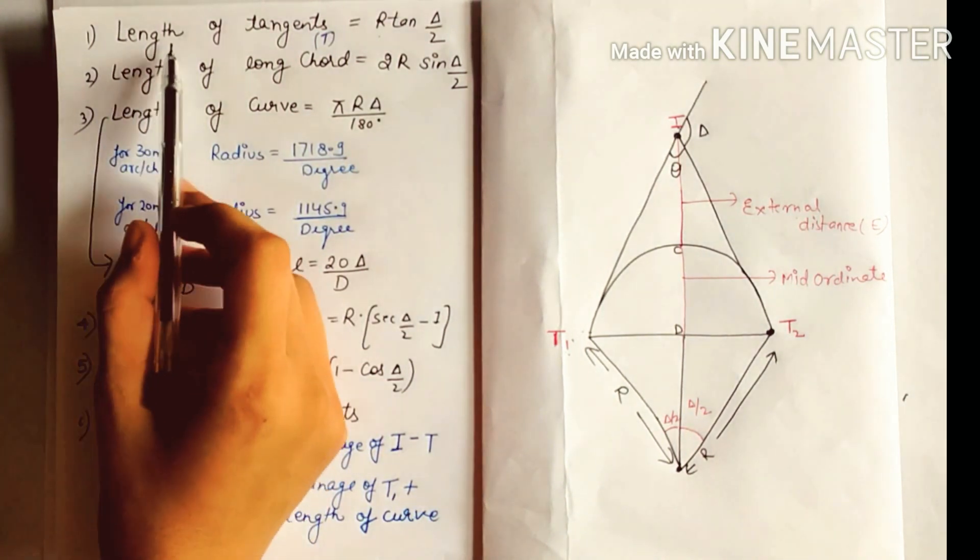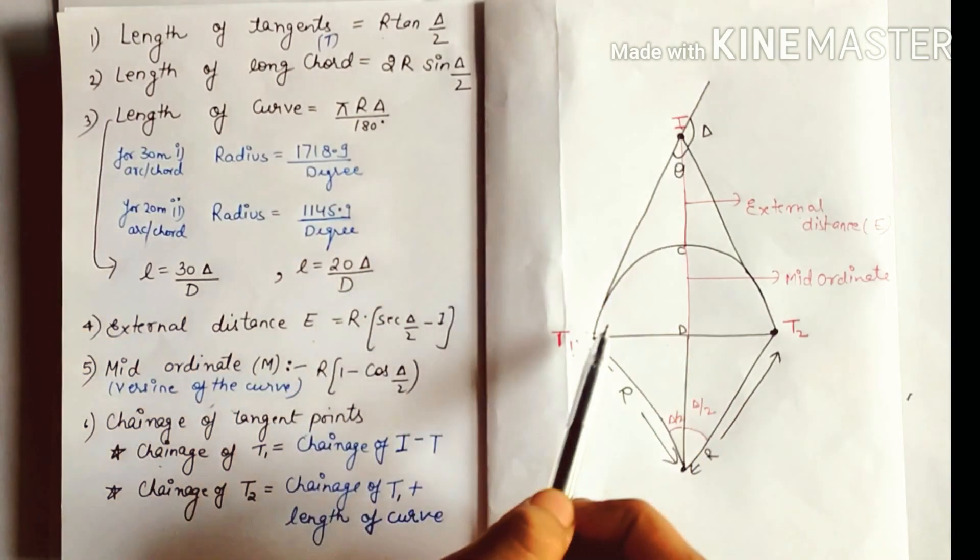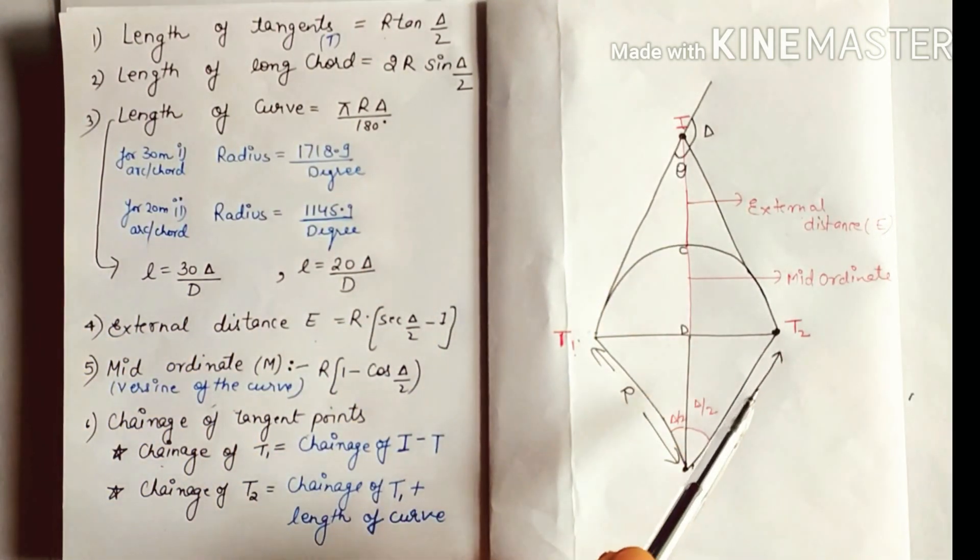The first formula is length of tangent: T = R tan(Δ/2). IT1 and IT2 are the length of tangents.